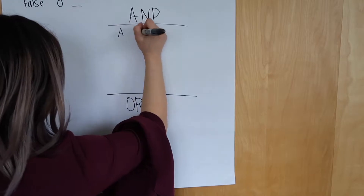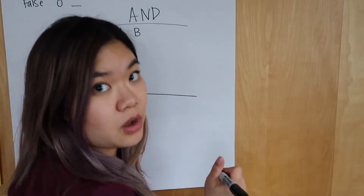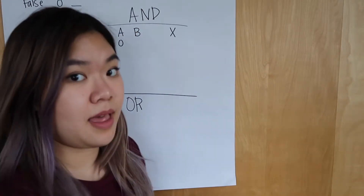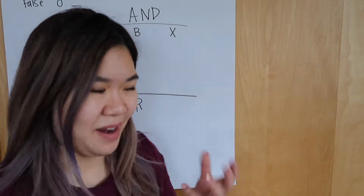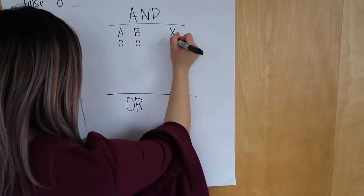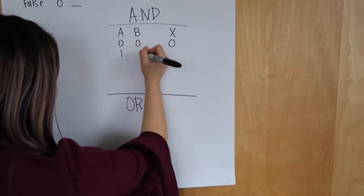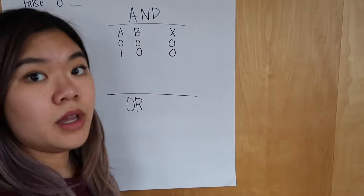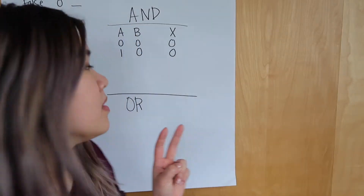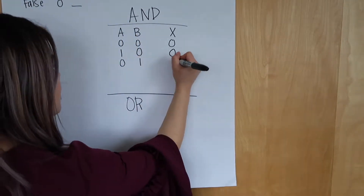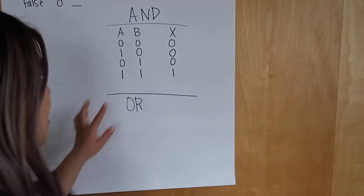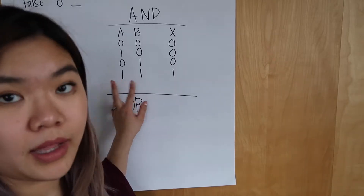Let's do A and B, with the results being X. If A is 0 and B is 0, the results will be 0. If A is 1 and B is 0, the results will also be 0, because in this case it requires that it has both of those qualities. The only case where you get a positive result — a true case — is if the A and B quality are both met.